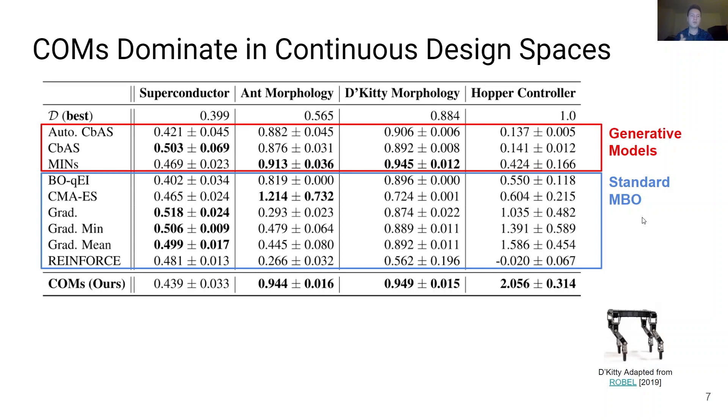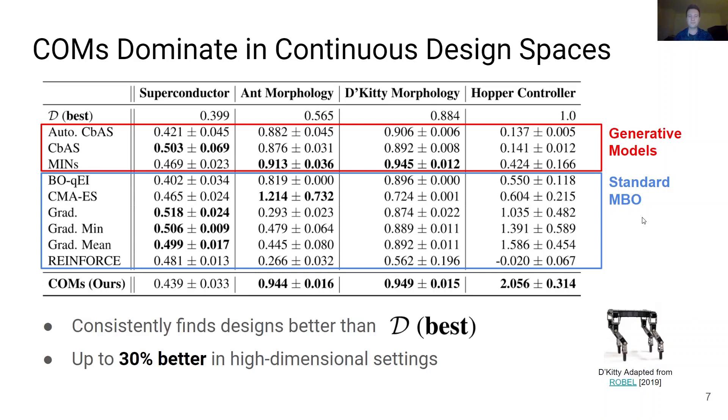In addition, the goal of the Hopper controller task is to design the weights of a neural network controller for the Hopper Mujoco agent. We find that conservative objective models are consistently able to find designs that are more performant than the best designs observed by the MBO algorithms during training. COMs perform up to 30% better in high-dimensional settings like the Hopper controller task with a design space of 5126 individual components to optimize. And COMs dominate the benchmark on continuous tasks, reaching optimal performance on three of the four tasks.